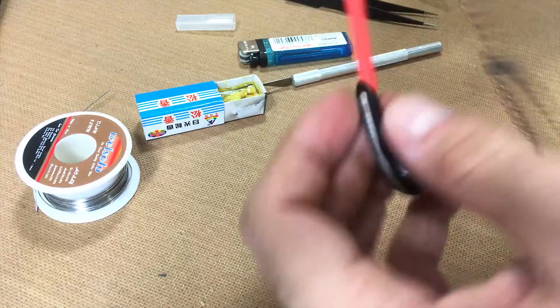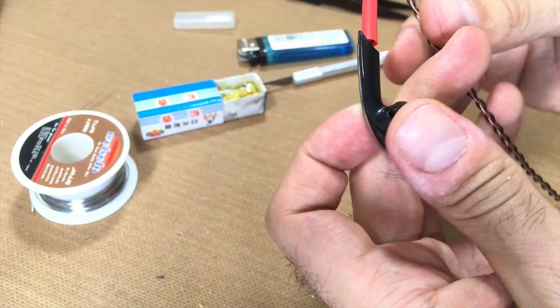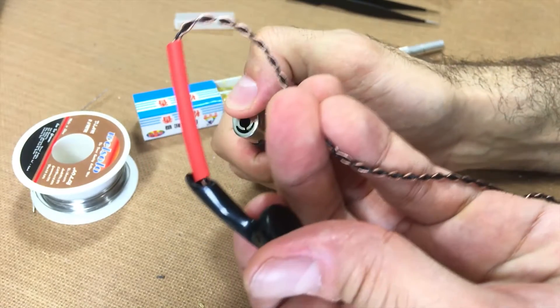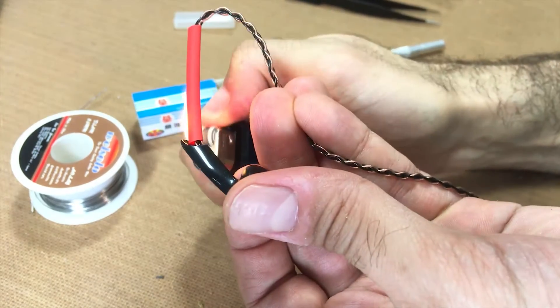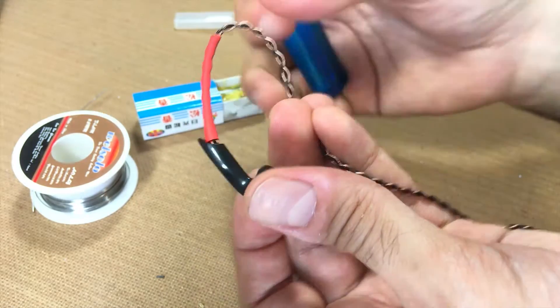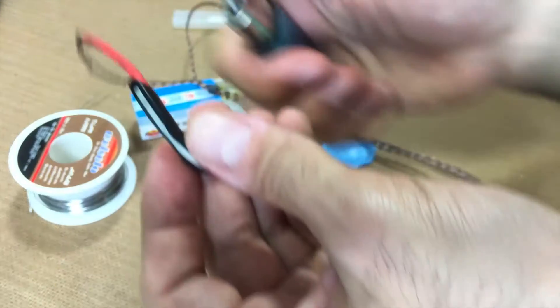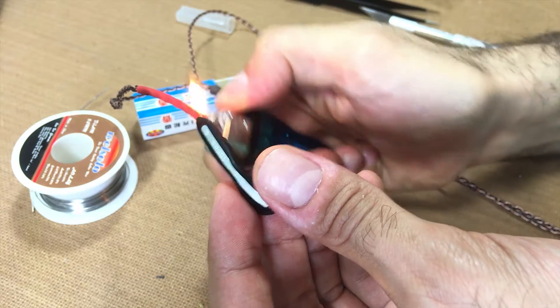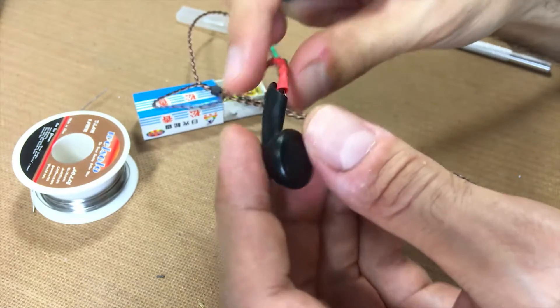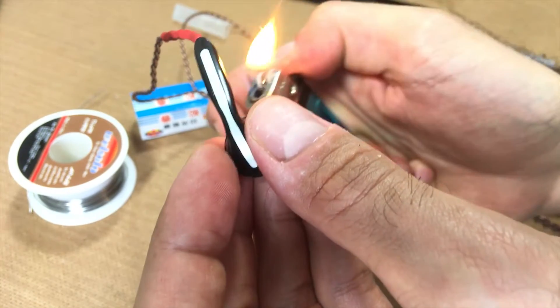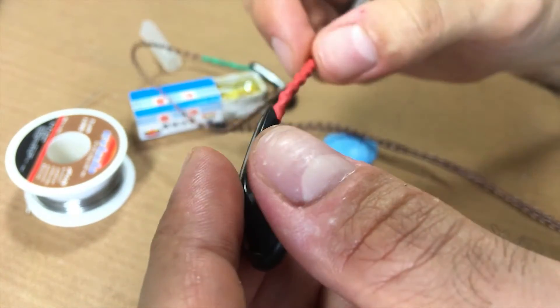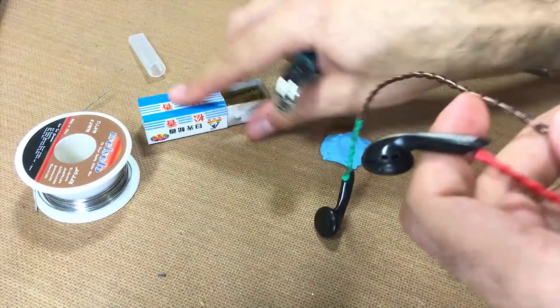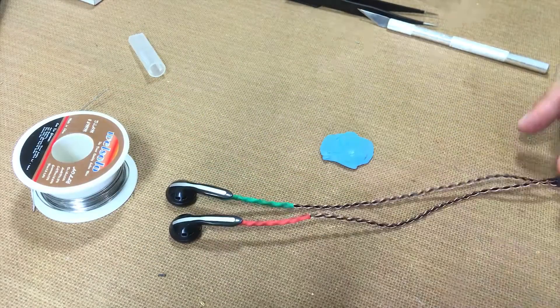Now here comes the fun part. I'm going to basically shrink that tubing onto the cable. Generally, you would use a heat gun. I don't have a heat gun, so I'm going to do it the hack way, which is using a lighter.